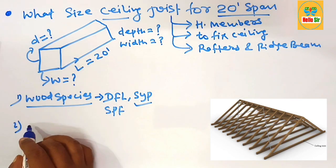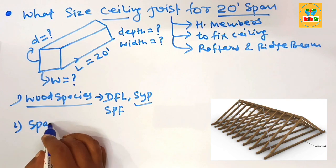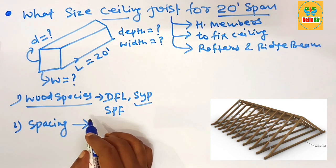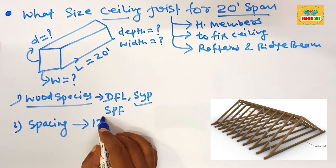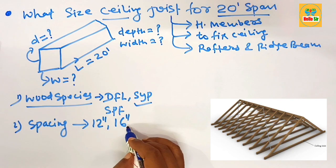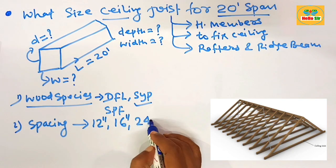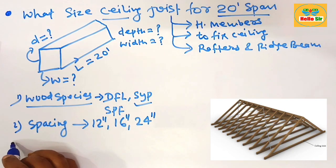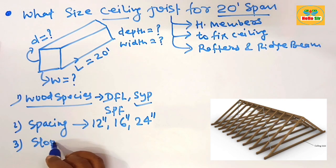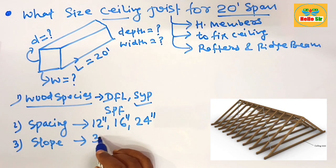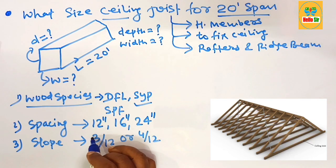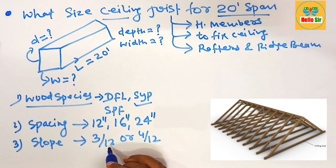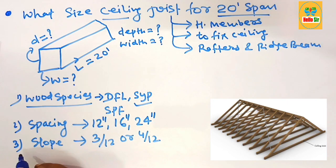The second factor is the spacing between joists. Standard spacing options are 12 inches apart, 16 inches apart, or 24 inches apart. The third factor is roof slope — for example, 3 by 12 or 4 by 12, meaning 3 inches of vertical rise for every 12 inches of horizontal run.